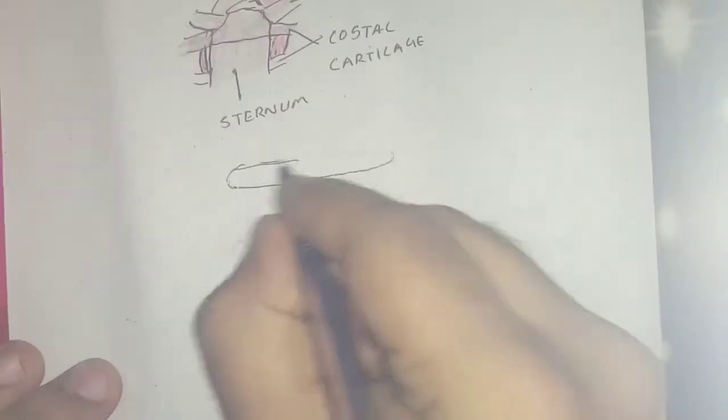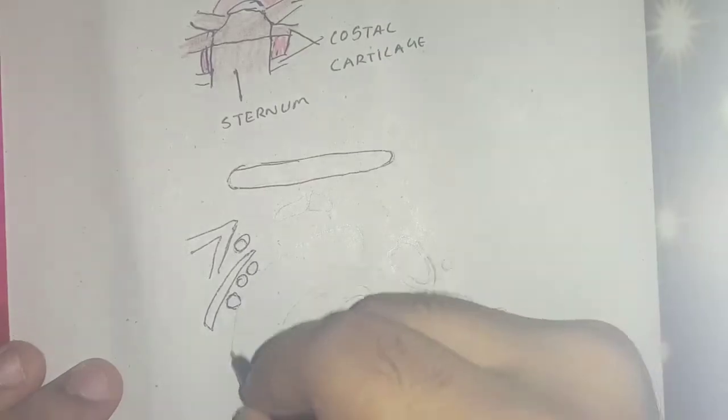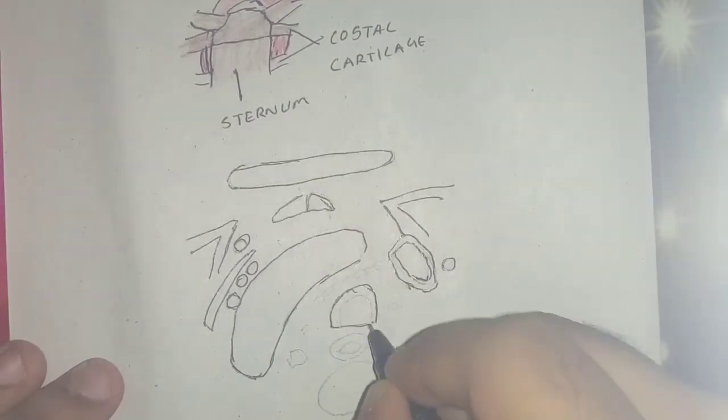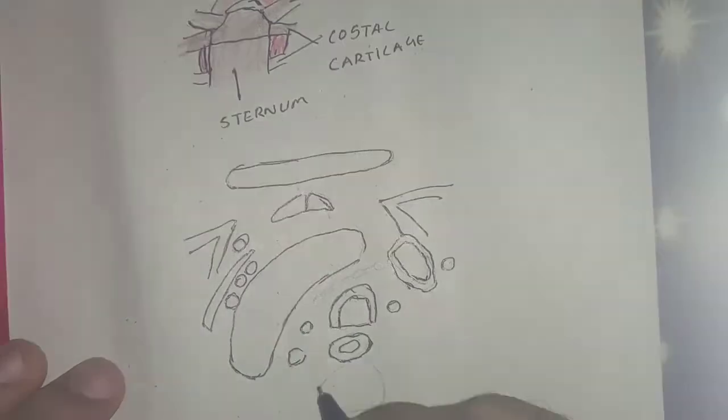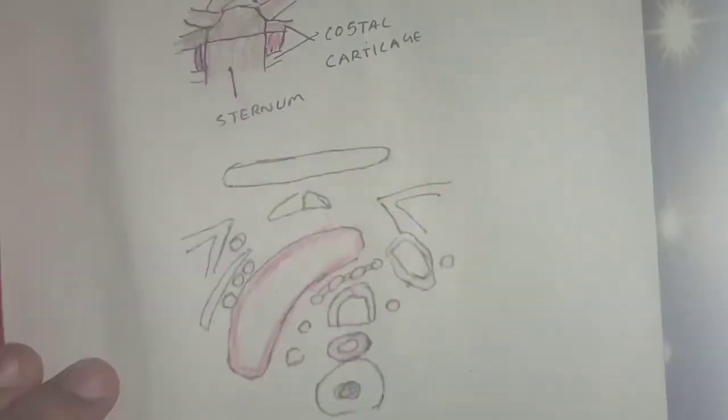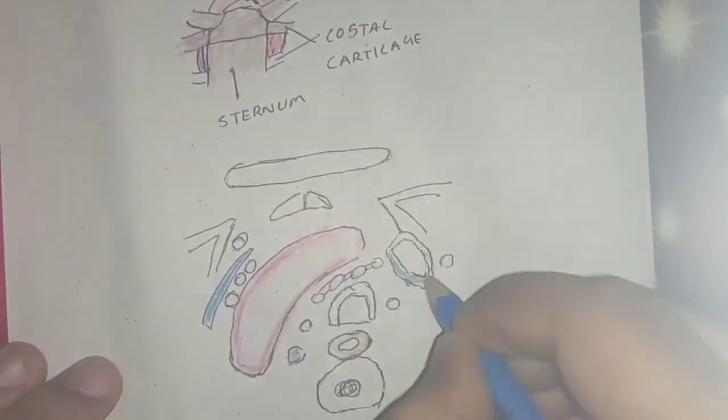Now let's discuss the relations of the arch of aorta. It has anterior and to left relations, posteriorly and to right relations, superior relations, and inferior relations. We have mnemonics so that we can remember it in a very easy way.